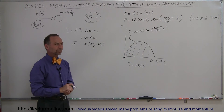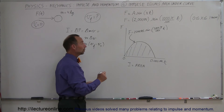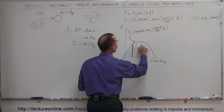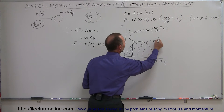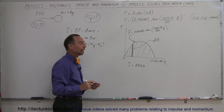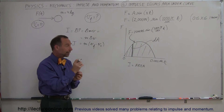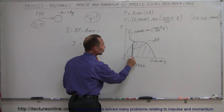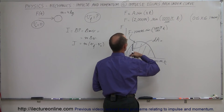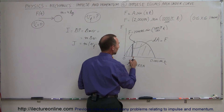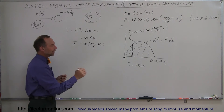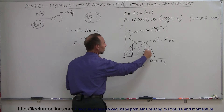We have to find the area underneath the curve. What we do is take a small little strip of area — a small dA, a small little slice of the total area. The area of that small rectangle is height times width. The width is a small change in time, so dA is the force at that moment in time — the height — times the width dt.